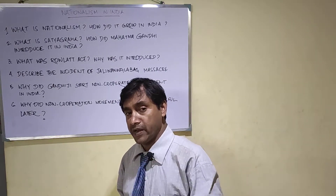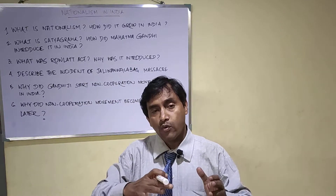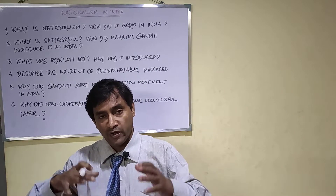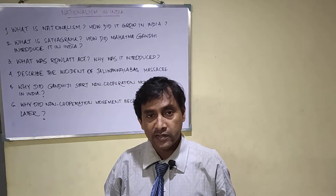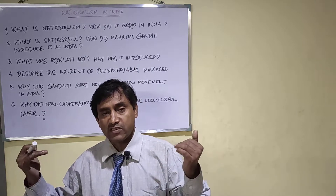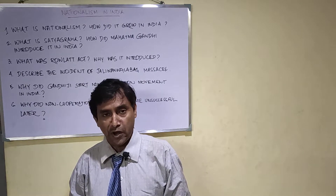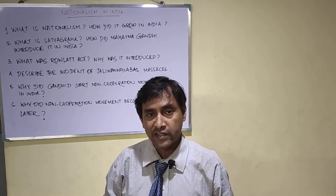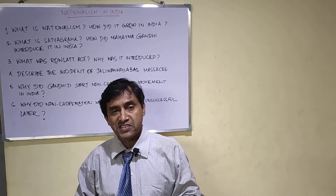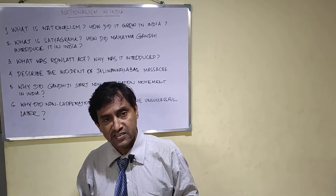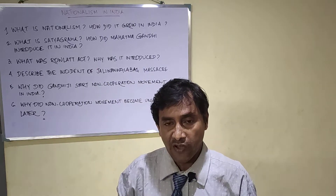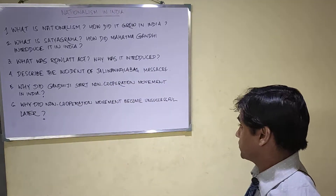The area was surrounded by a high wall with only one entrance point. General Dyer thought that people had broken the Martial Law. He came with force, blocked the exit point, and started open fire, and hundreds of Indians were killed. This pathetic and horrible incident at Jallianwala Bagh is called the Jallianwala Bagh Massacre. This is a very important question.